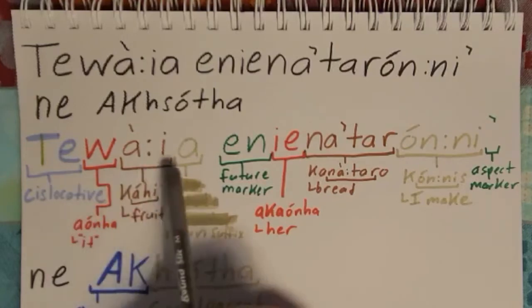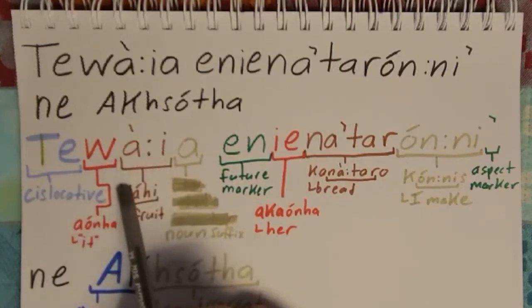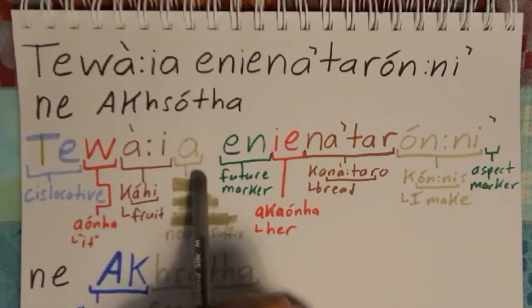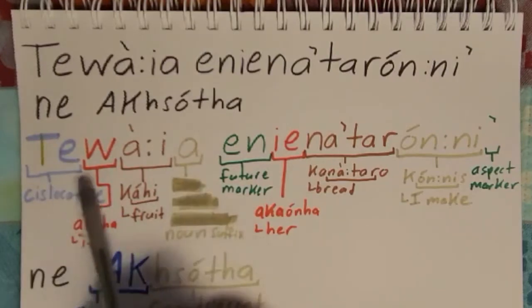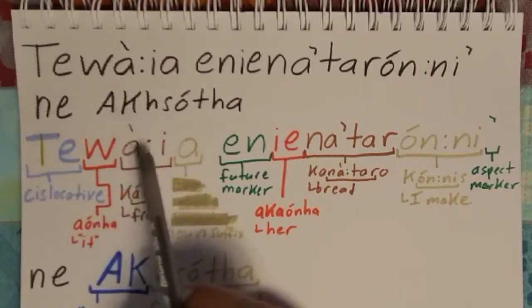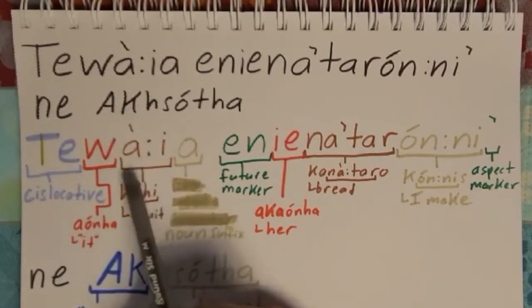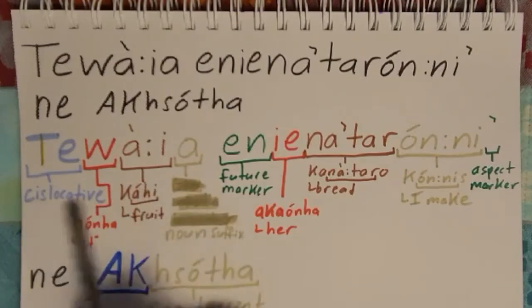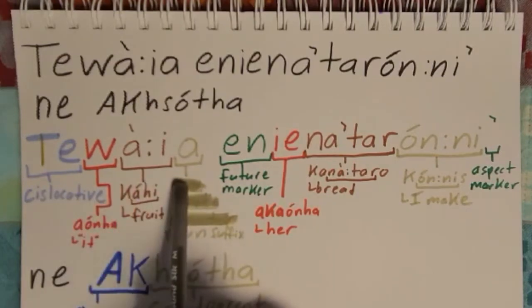We also can say 't'ka'wara' — you can hear the T, that's the dislocative, and the A at the end: 't'ka'wara'. The only difference there is that's talking about meat. So that's meat pie. This here is a pie that's made with fruit.